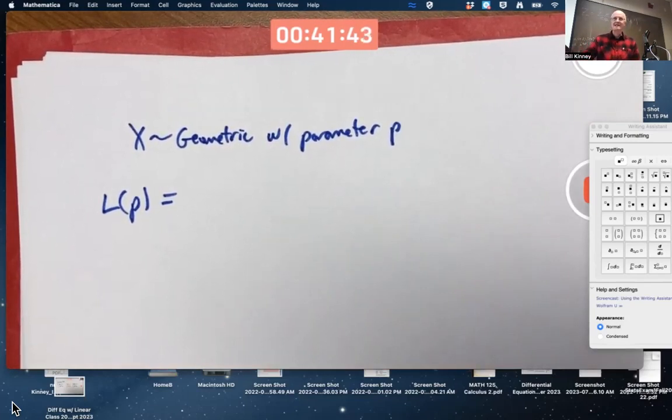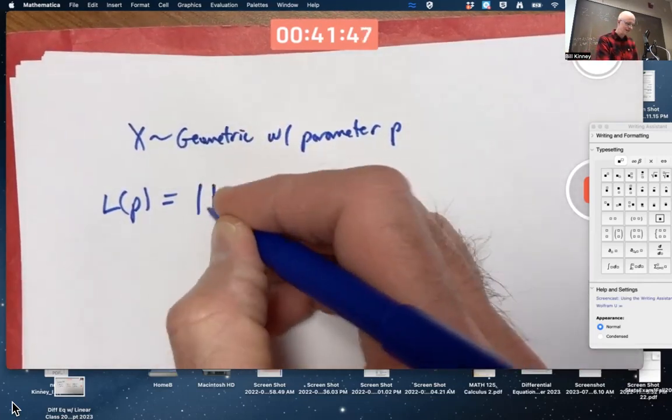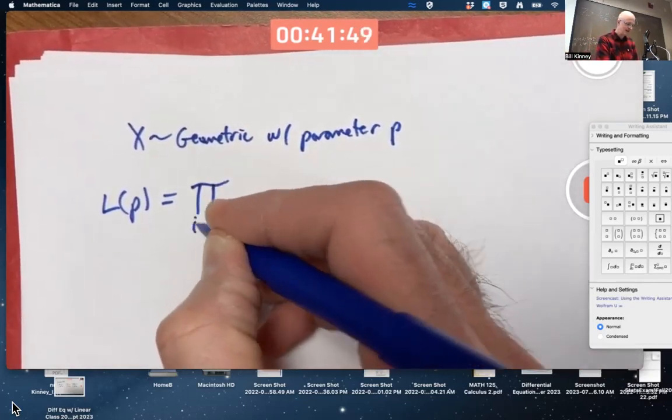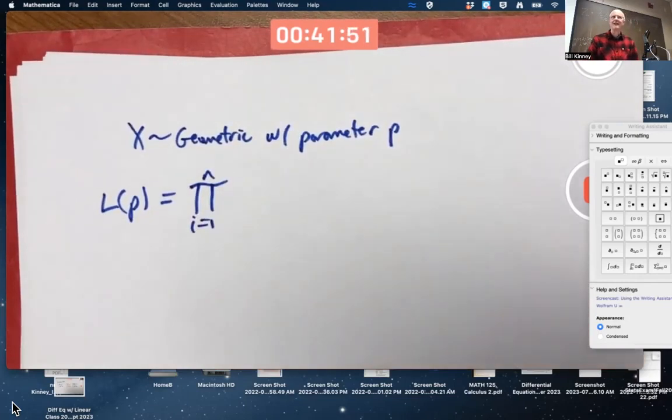And as Dr. Wetzel emphasized about a half hour ago, it's a product of values of the PDF, or if it's a discrete random variable, I've been calling that a PMF.